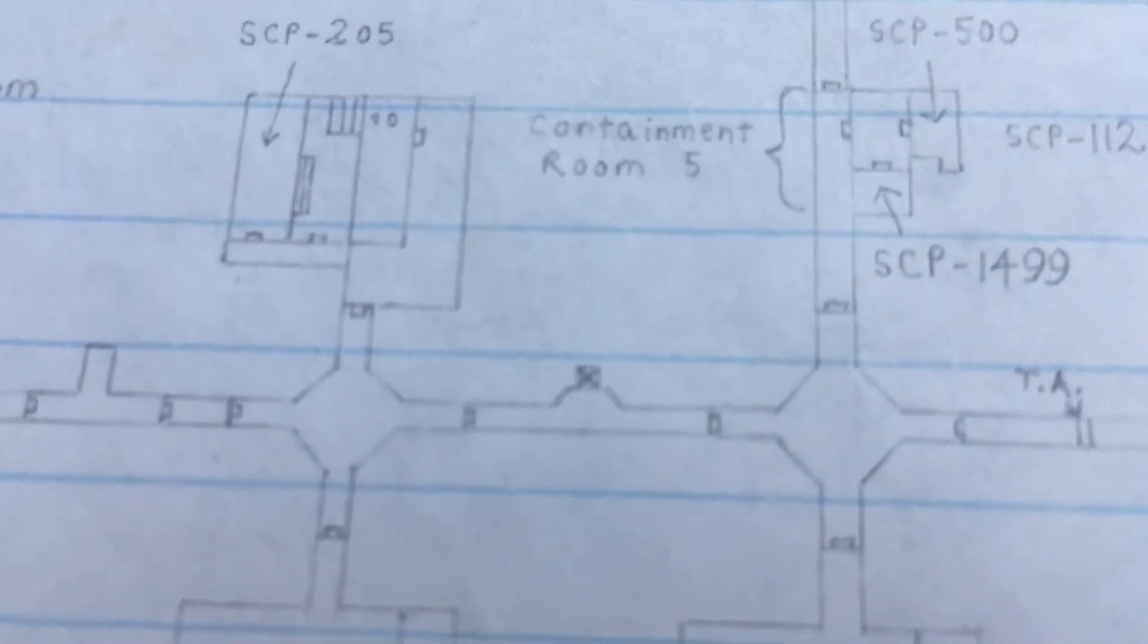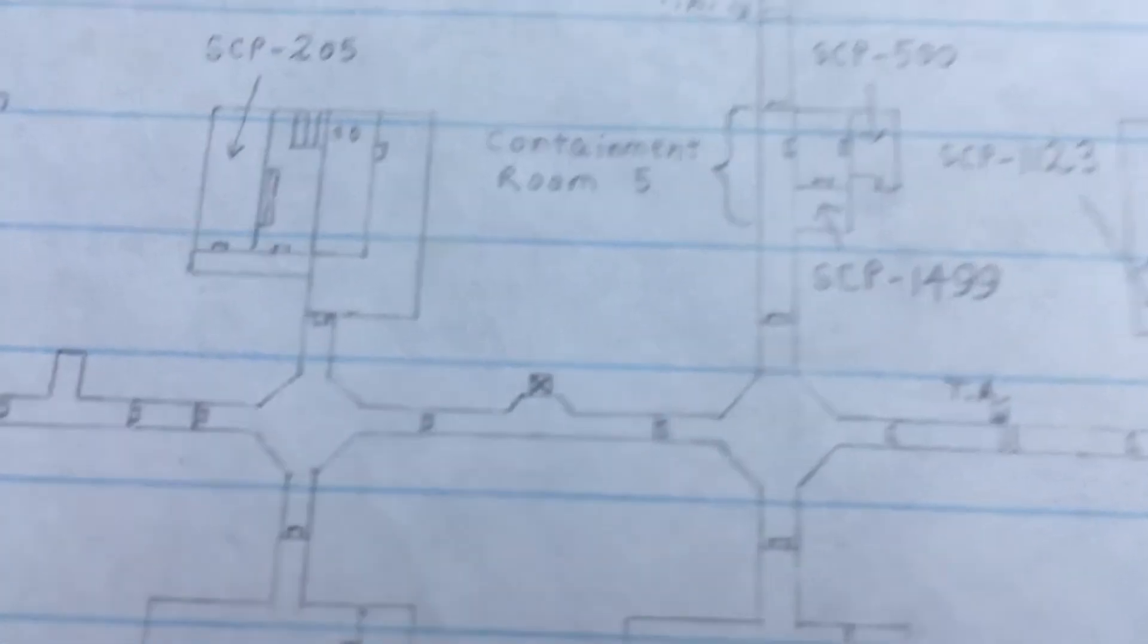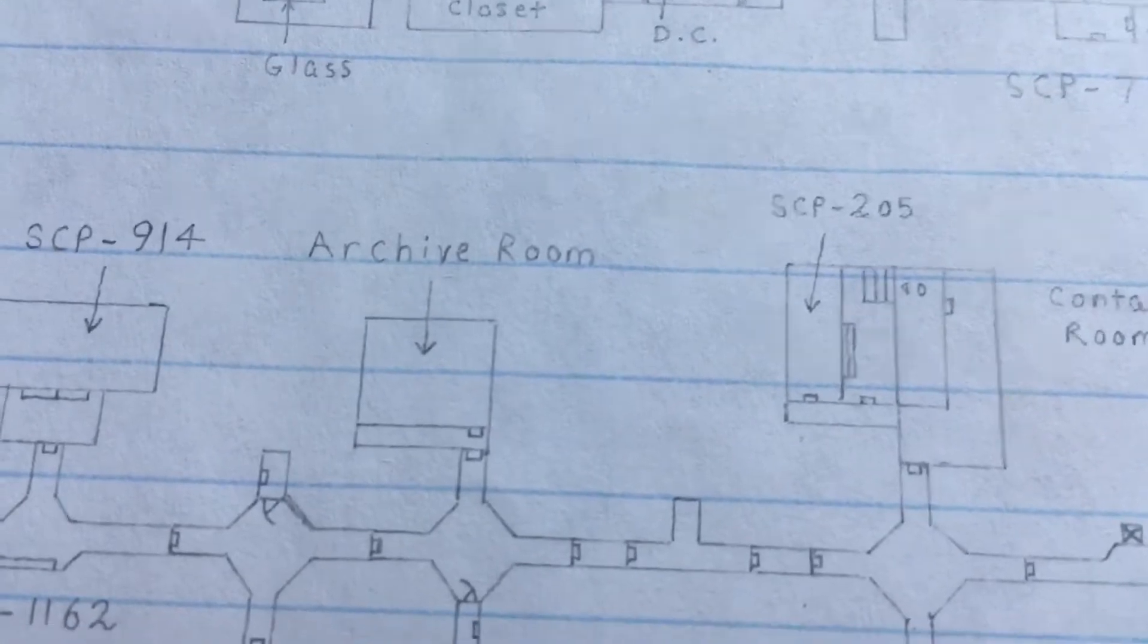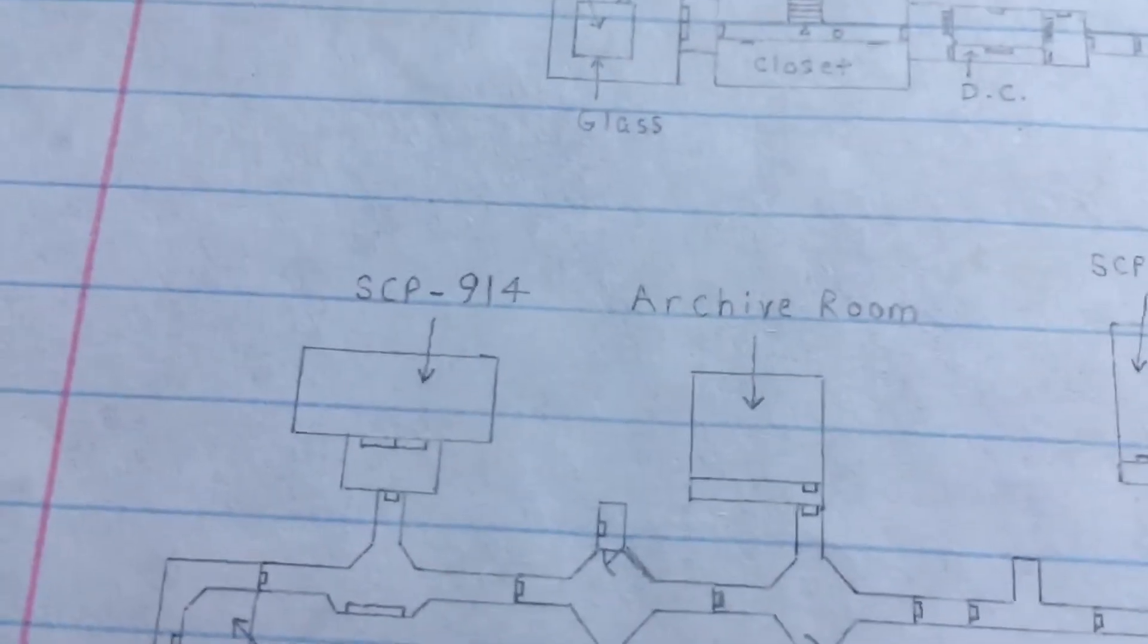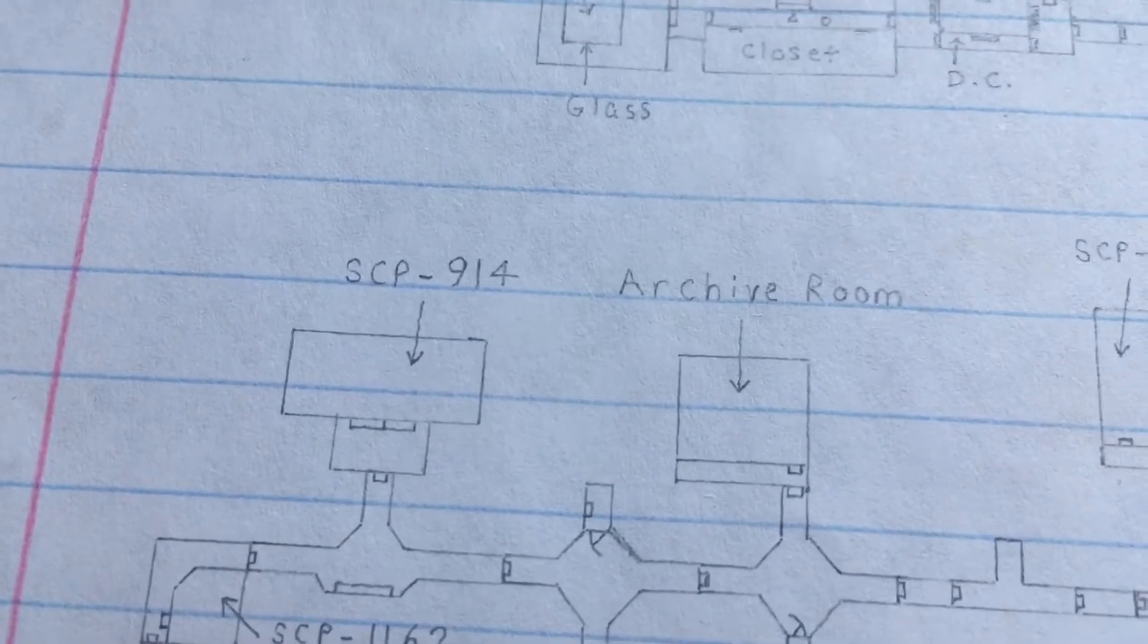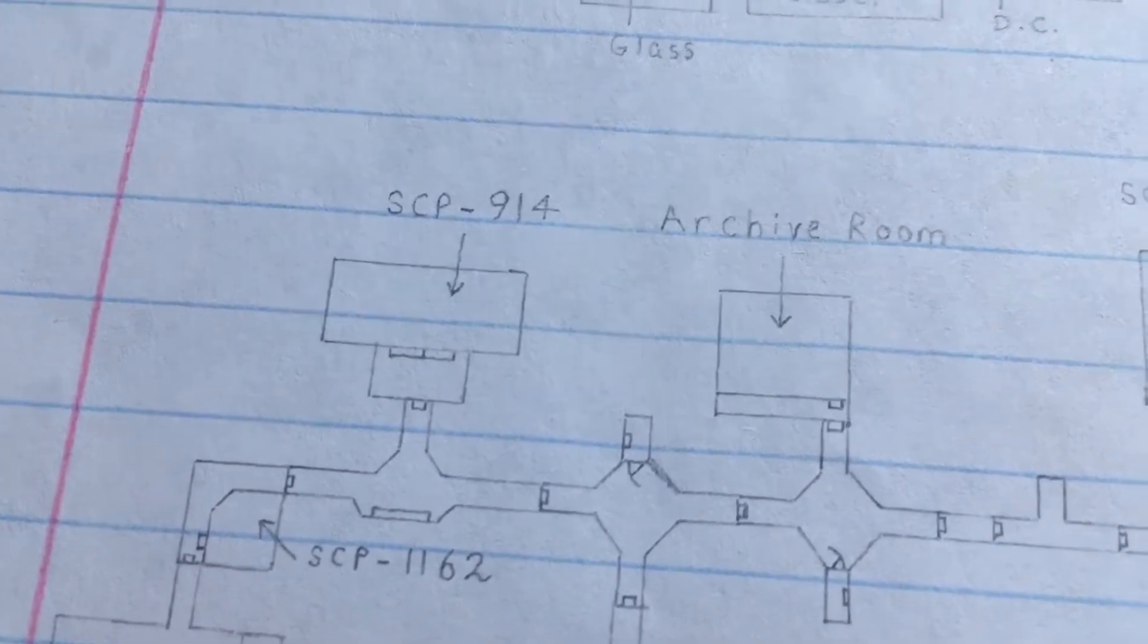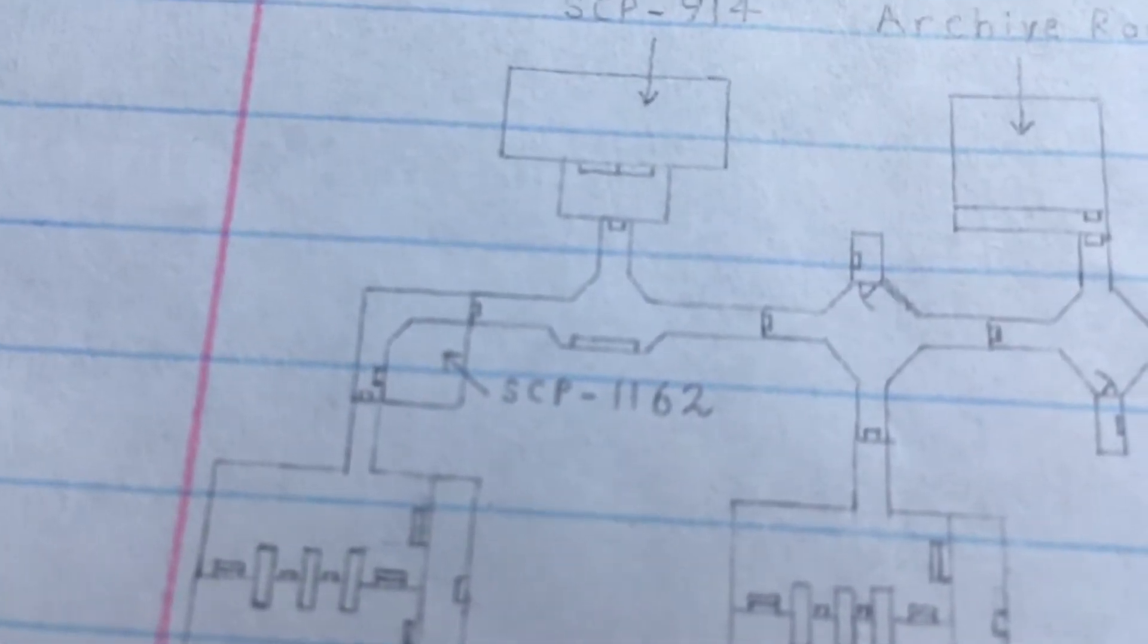Here you have the elevator with the corpse in it. I think his name is Jason or something. You have the archive room with a bunch of documents for some of the SCPs, and you also have 914's chamber where you can level up your keycard and some other stuff, pretty useful. You also have 1162.